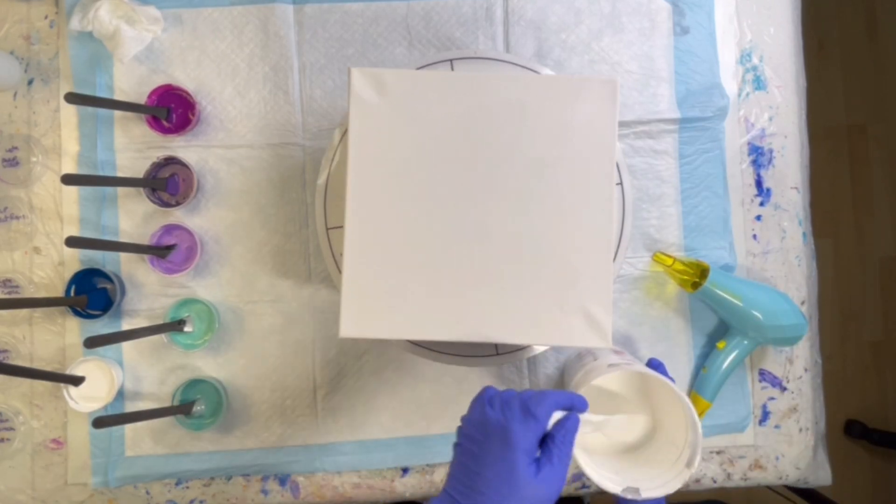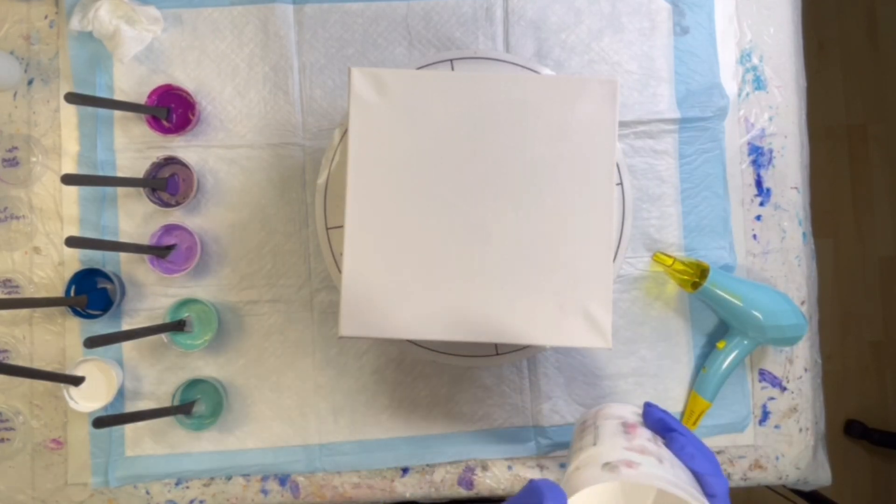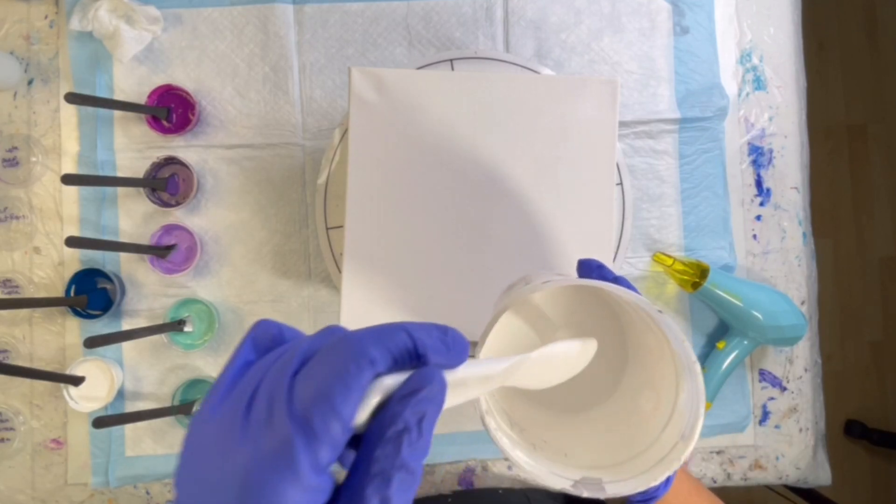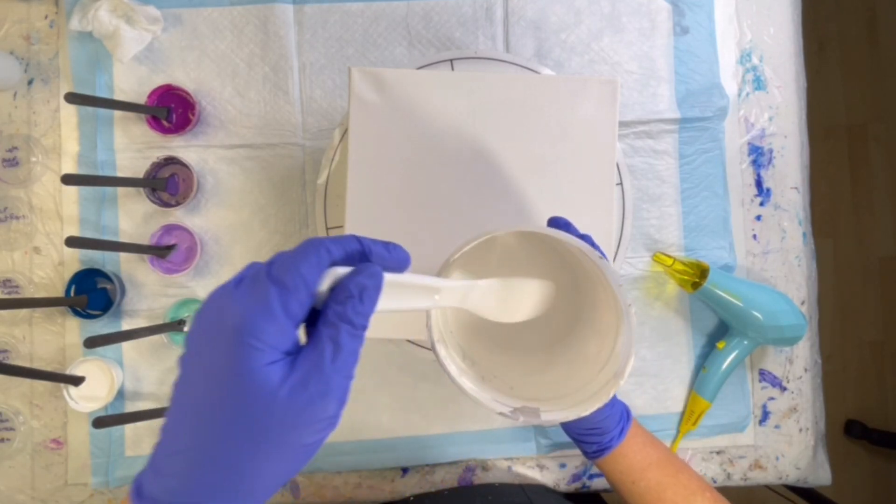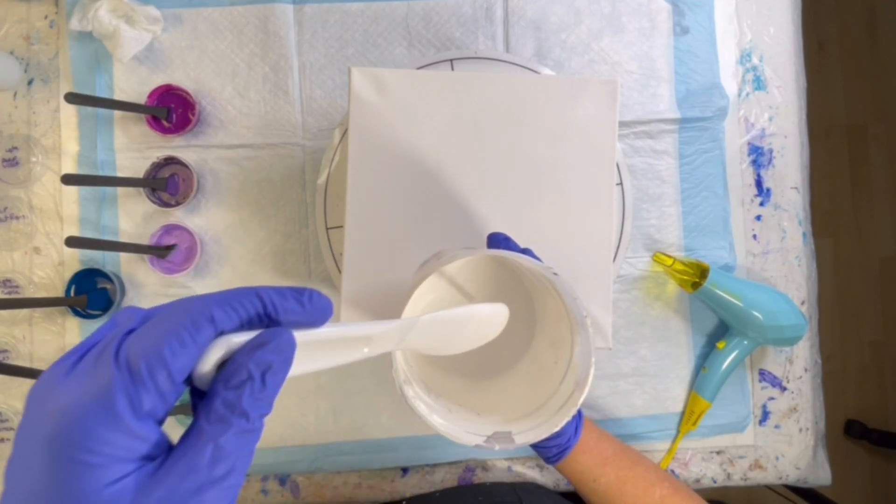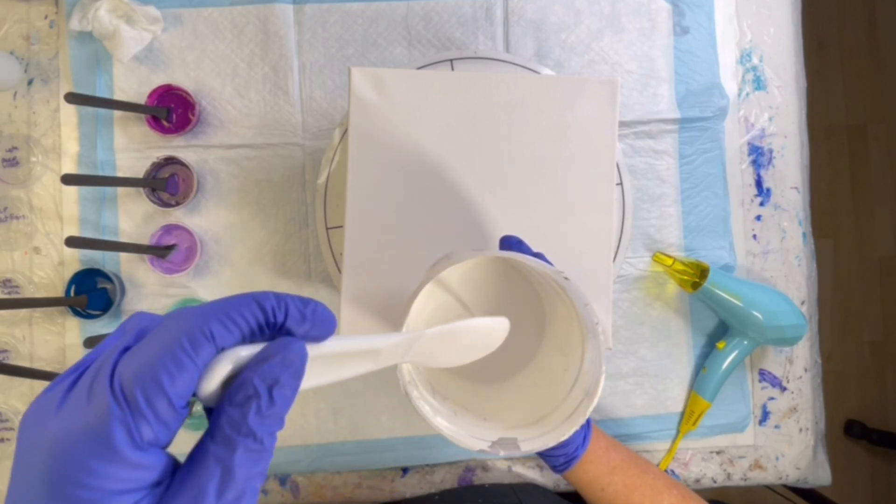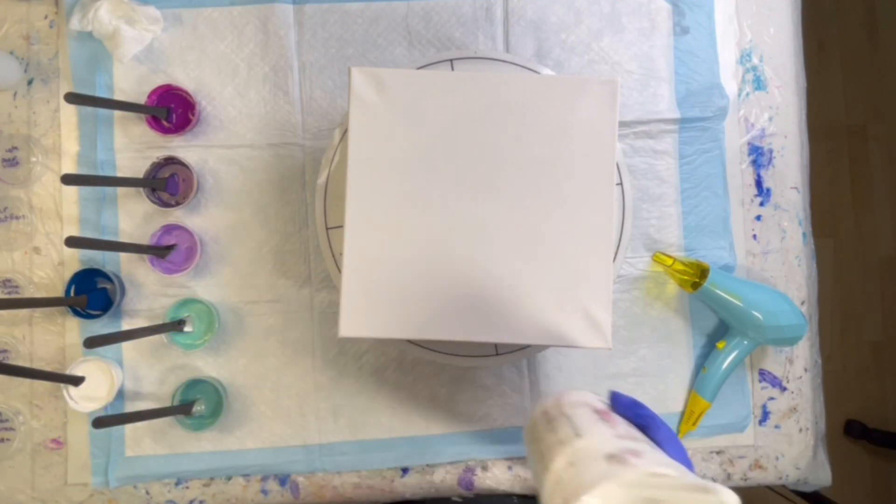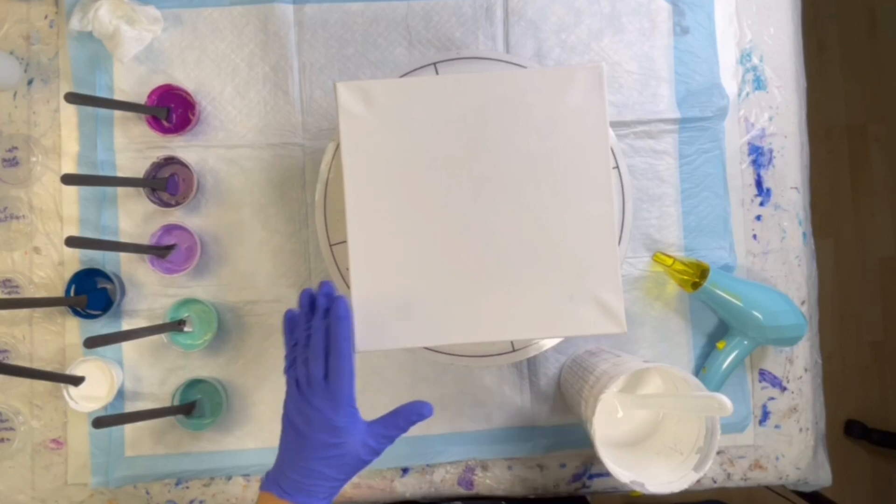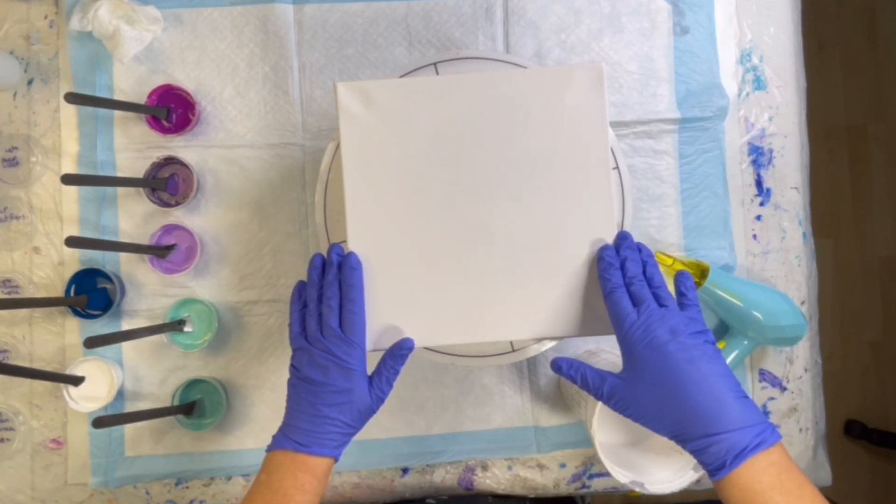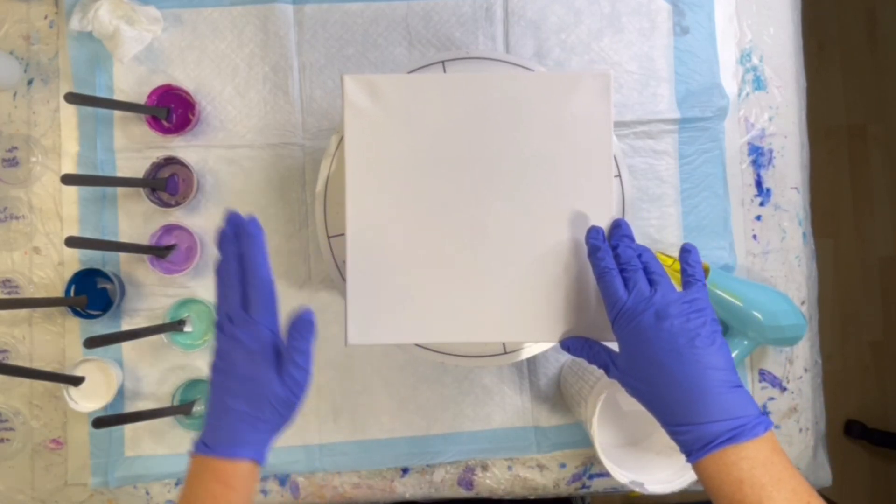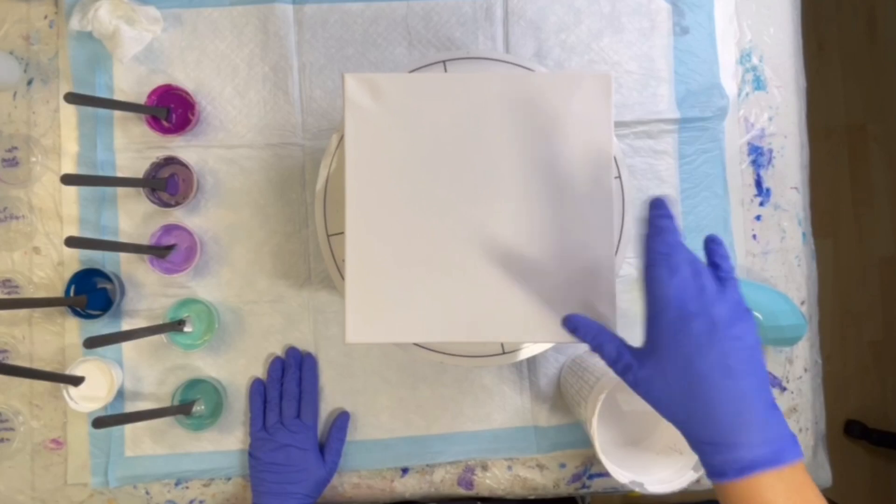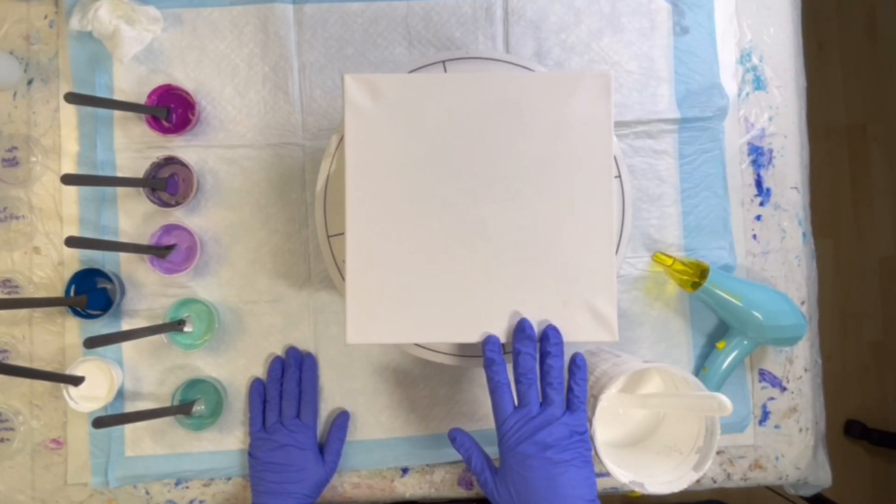I am using the Bloom recipe. It is very hot here in Arizona. So my base paint is quite thin. It's thinner than what I would really like for it to be. I'm hoping it'll be okay though. I have a 10 inch by 10 inch canvas.